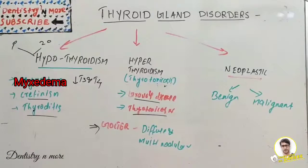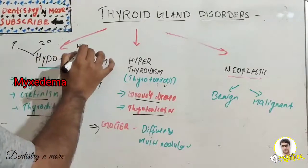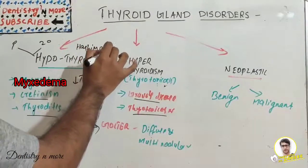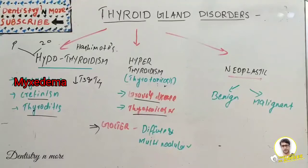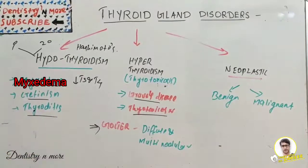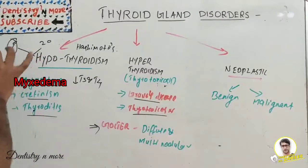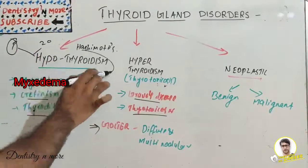Primary causes include dietary deficiency — iodine intake less than normal — autoimmune problems such as Hashimoto's thyroiditis, drugs such as thiocyanates, sulfonylureas, or lithium, iatrogenic reasons like surgical removal of the thyroid gland or radiation treatment, infiltrative disorders, or very rarely a congenital cause.